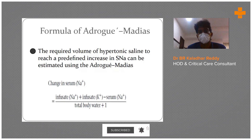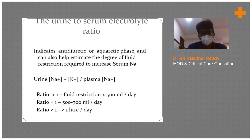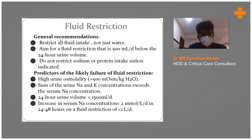The urine-to-electrolyte ratio versus serum electrolyte ratio indicates whether the patient is in an antidiuretic or aquaretic phase. The formula is: (urine sodium + potassium) ÷ plasma sodium. If this ratio is more than 1, restrict fluid to less than 500–700 ml per day. If the ratio equals or is less than 1, restrict fluid to less than 1 liter per day.